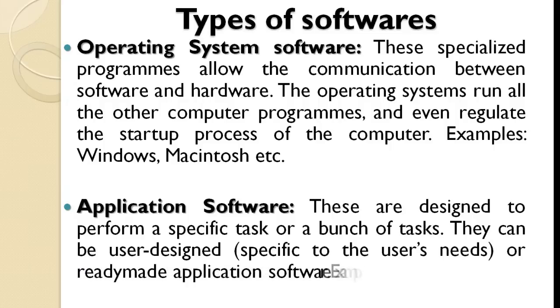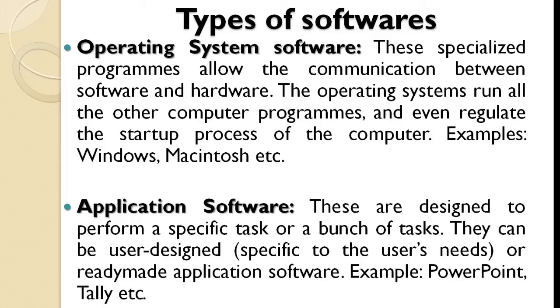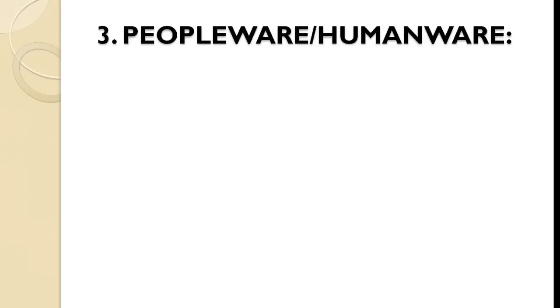Examples of application software include: Microsoft Word, WhatsApp, Facebook, TikTok, PowerPoint, and CorelDRAW. Lastly, we will be looking at the last but not the least element of the computer, which is the Peopleware, also known as the Humanware.